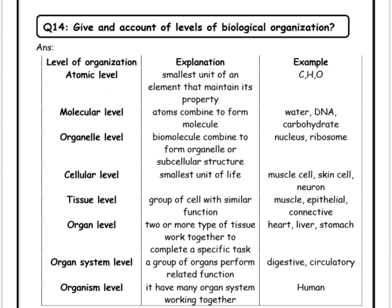Groups of similar cells performing similar functions combine to form the tissue level. For example, muscle is a tissue; others include epithelial tissue and connective tissue. Two or more types of tissues work together to complete a specific task — that is called the organ level. Different organs in living things include the heart, liver, and stomach.